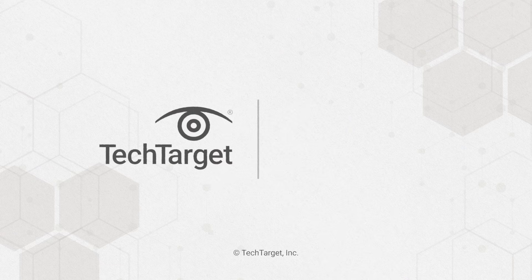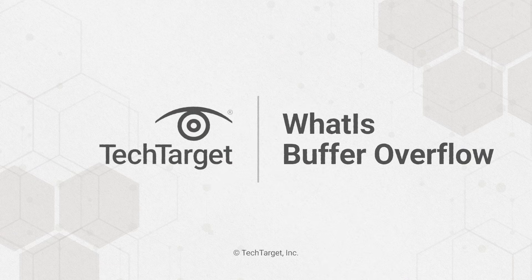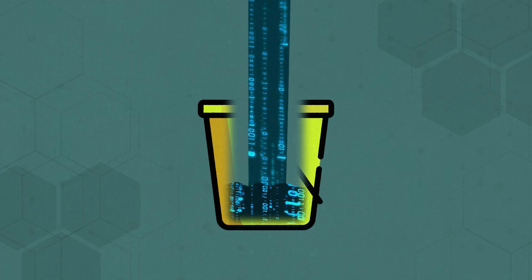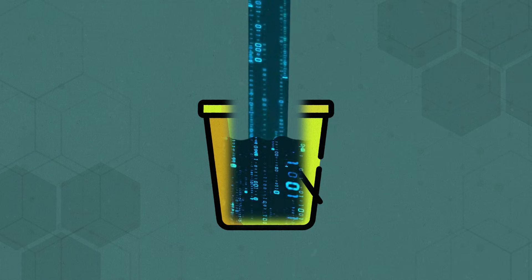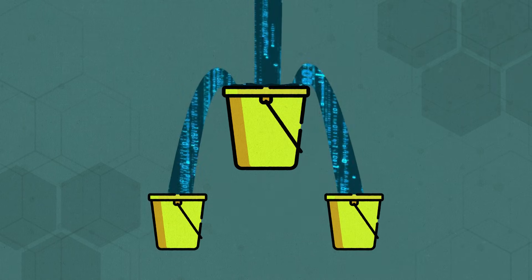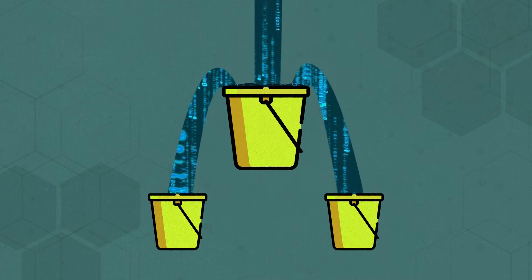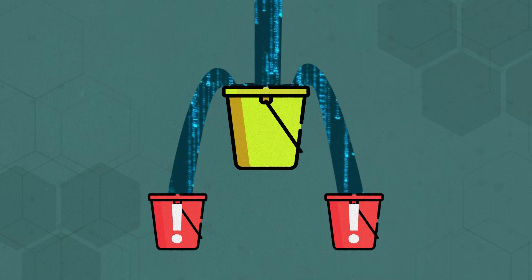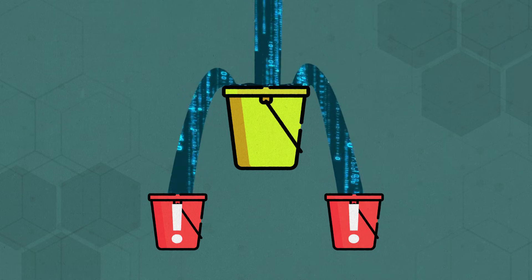Don't cry over spilled milk or spilled data. A buffer overflow happens when a program tries to store more data in a memory buffer than it can hold, causing the extra data to spill over into nearby memory. The extra data overwrites the adjacent memory, which can cause crashes, errors, and security challenges.